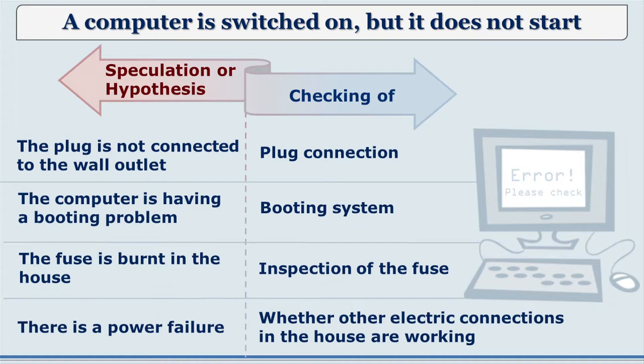The next speculation could be the fuse is burnt in the house, so one goes and checks the fuse — it is working. Then the next speculation could be there is a power failure, so one checks the other instruments in the house whether they are working properly, and even checks the neighbor's house whether they have electric supply.